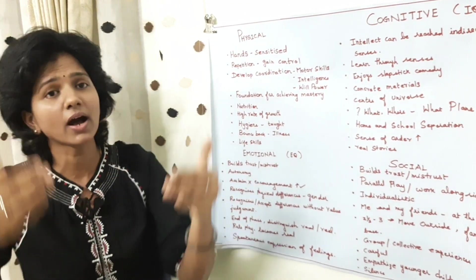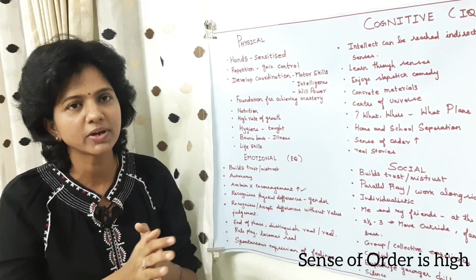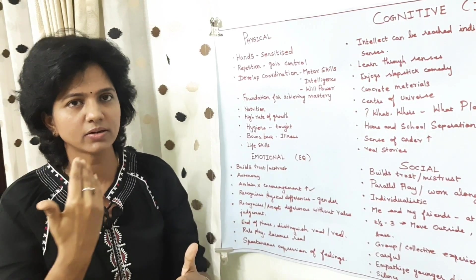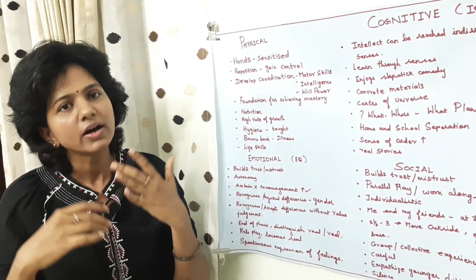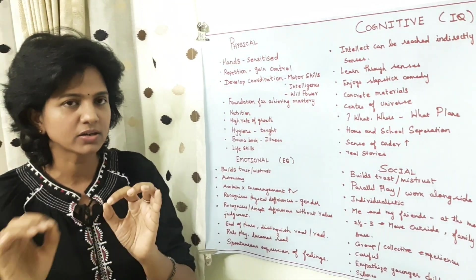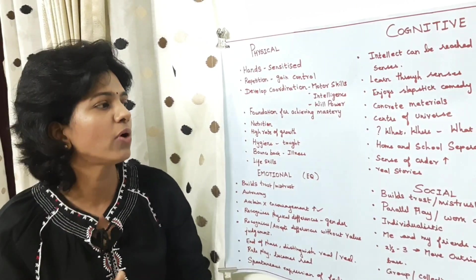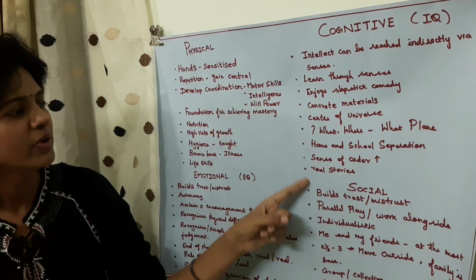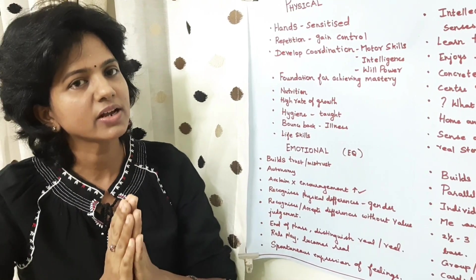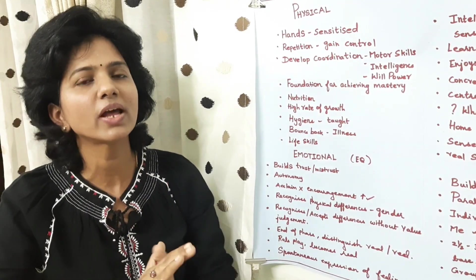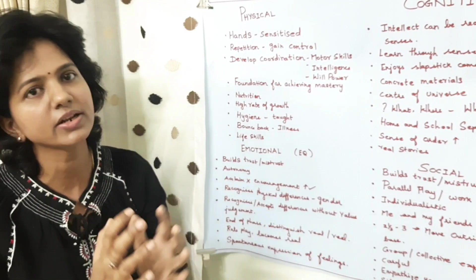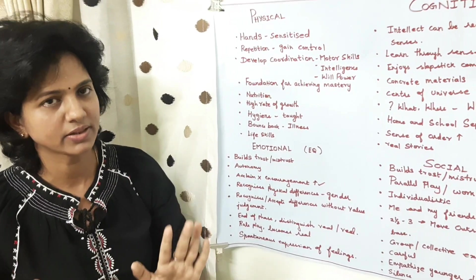Their sense of order is very high — if something is missing or moved, they keenly observe it because their senses work very optimally. If you move something to a different place, inform them. When reading stories, choose real-time stories — they cannot connect with imagination or fantasy stories. Books with animals talking or any fantasy should be avoided. Ages 6 to 12 is when they can connect with imagination and abstraction.